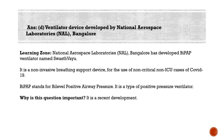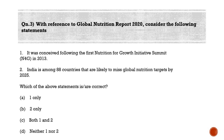Moving to the last question: with reference to the Global Nutrition Report 2020, consider the following statements. Statement one: it was conceived following the first Nutrition for Growth Initiative summit (N4G) in 2013. Statement two: India is among 88 countries that are likely to miss global nutrition targets by 2025. Which of the above statements are correct? Option A: one only. Option B: two only. Option C: both one and two. Option D: neither one nor two.